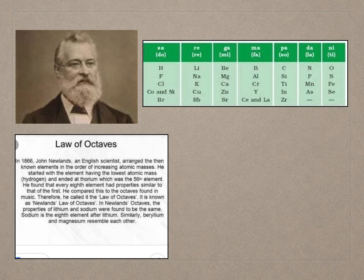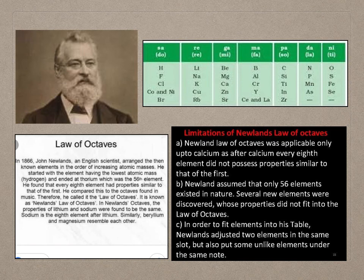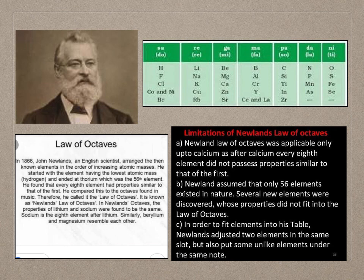Many limitations were found in Newlands' Law of Octaves. The first limitation was that it was applicable only up to calcium, as after calcium every eighth element did not possess properties similar to that of the first. The second limitation was that Newlands assumed only 56 elements existed in nature. Several new elements were discovered whose properties did not fit into the law. In order to fit elements into his table, Newlands adjusted two elements into the same slot and also put some unlike elements under the same note.